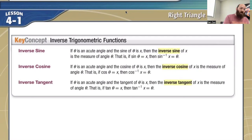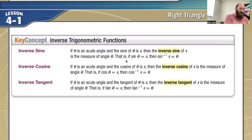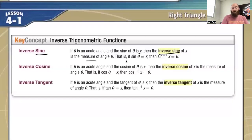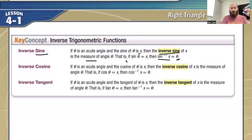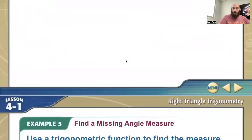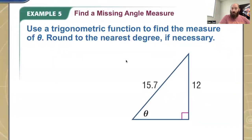The idea with all these inverses is that they are going to undo our sine and cosine and tangent. They also help tell us our angle. So inverse sine: if theta is an acute angle and the sine of theta is x, then the inverse sine of x is the measure of my angle theta. If sine of theta equals x, inverse sine of x is theta. So how we use that is we find missing angles.